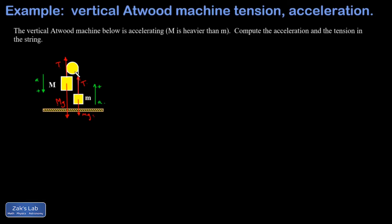If you don't draw things to scale it's not going to break the mathematics, but it's nice to have things qualitatively right in the diagram. Now I analyze Newton's second law on each of these masses, starting with little m. Writing down F_net equals ma gives: F_net equals little m times a.